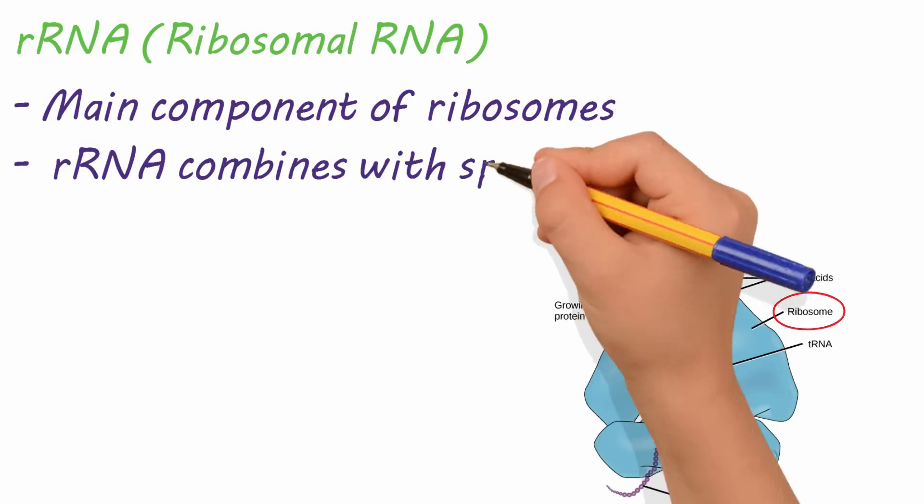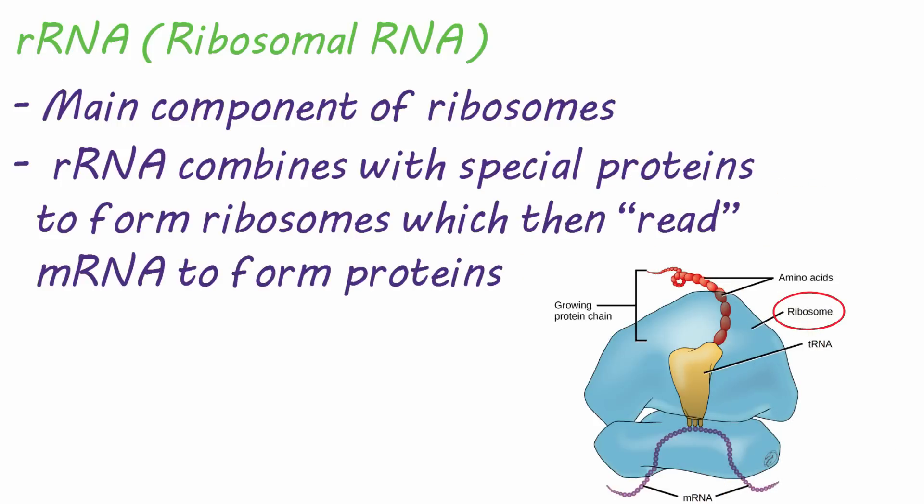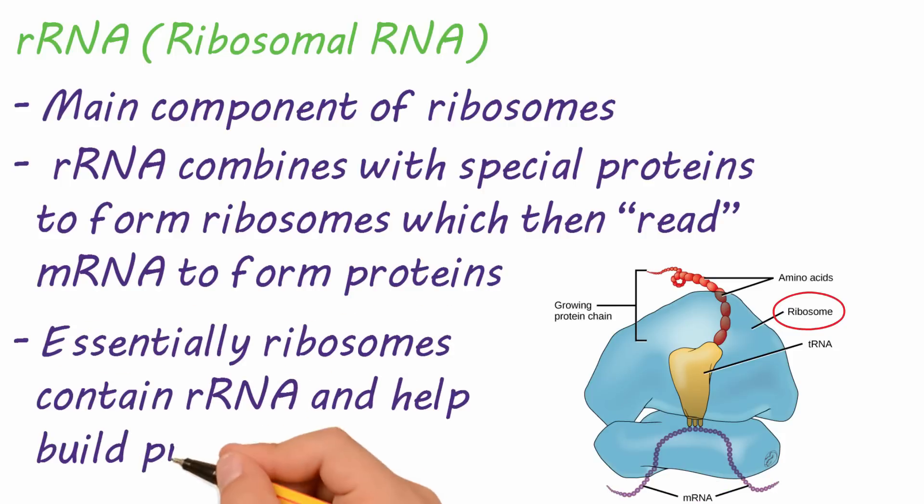rRNA combines with special proteins to form ribosomes, which then read mRNA to form proteins. There's a lot in that sentence, so feel free to jump back and listen again if you need to. But essentially, ribosomes contain rRNA and help build proteins.